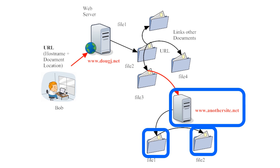In all probability, the web document files for anothersite.net would be located on a completely different server than the files associated with dougj.net. Indeed, these servers could be on opposite sides of the globe. But if Bob has a good internet connection, he can browse through those web documents stored on servers thousands of miles apart more quickly than he could browse through a book on the other side of his office. This is all thanks to the lightning quickness of electric signals and the shrewd networking techniques that we've been describing in these lessons.